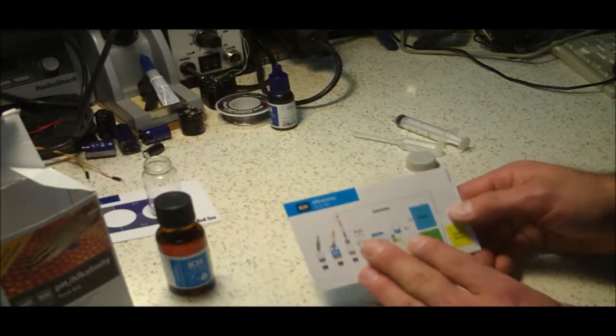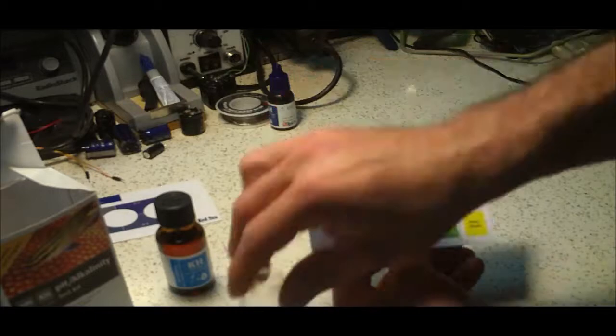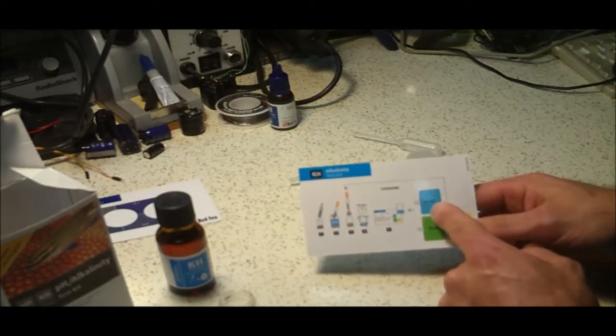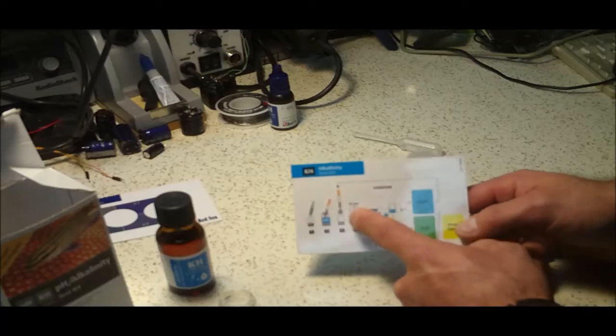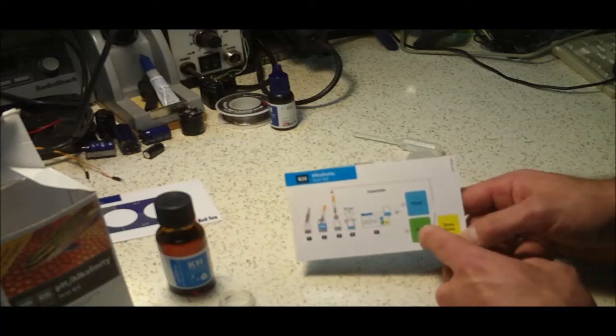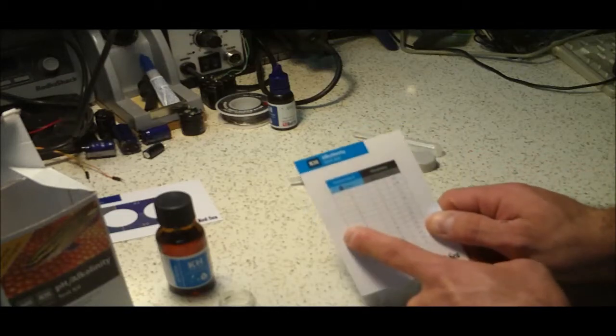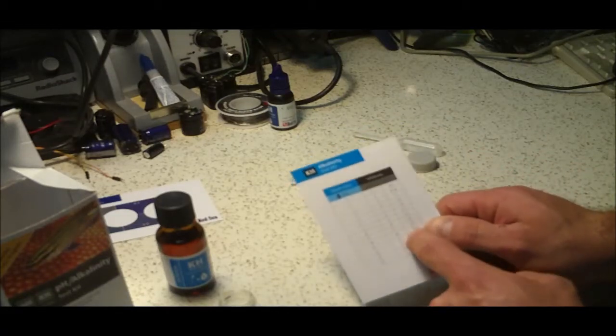The alkalinity, you put 5 milliliters of water again into the glass vial. You add a drop until you get it to this blue color. And then you add drops one at a time, shake it in between until you get this green color. Then you take the chart on the back, figure out how many drops you've used, and that tells you what your alkalinity is.